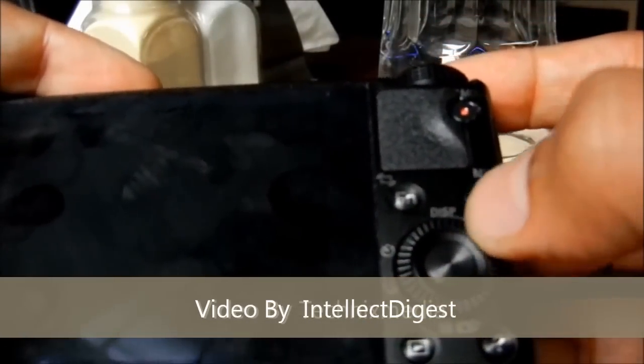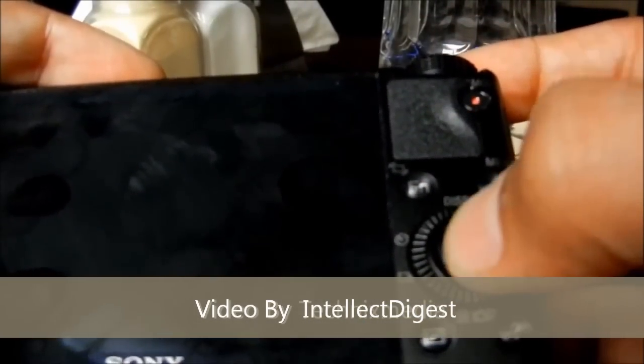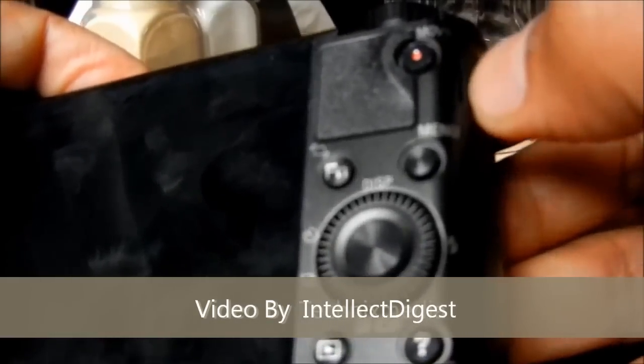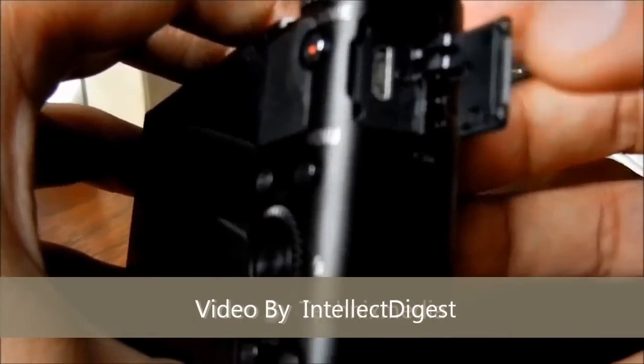Here you have got basic jog dial with a center button. Four buttons here for controlling all the functionalities. This movie button is a dedicated button for video recording. This side you have got USB connector.